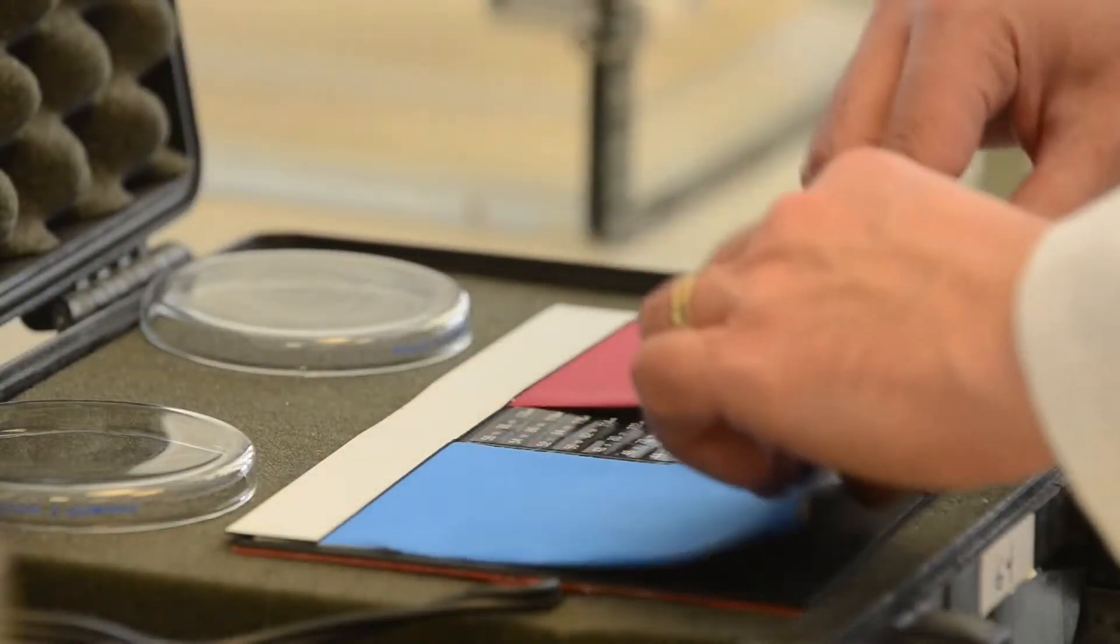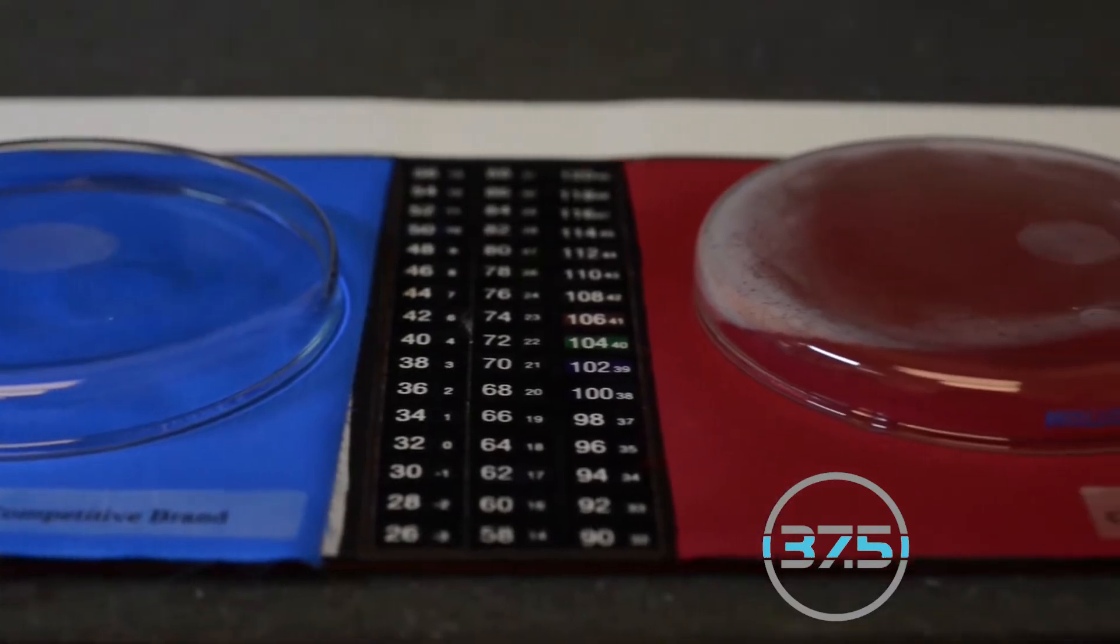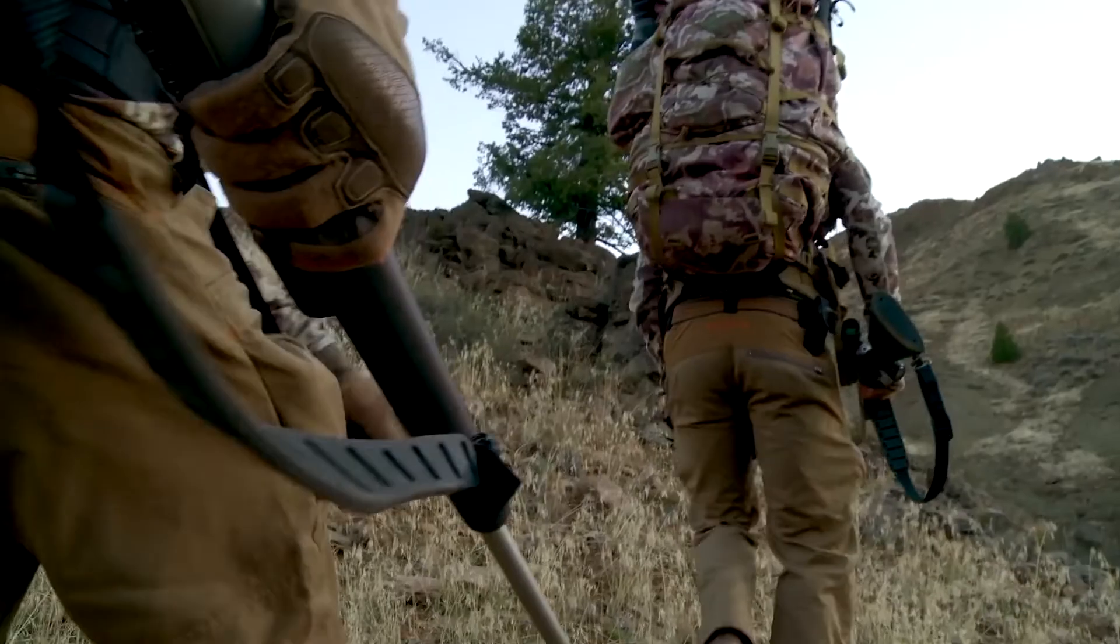37.5 fabrics dry up to five times faster than conventional synthetics and the net result is that 37.5 technology keeps you in your optimum temperature and humidity zone. For active hunting, it literally increases your energy levels, allowing you to hunt harder for longer.